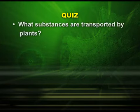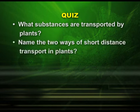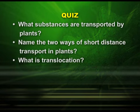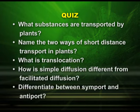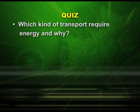Dear students, let us have a simple quiz. Try to answer the following questions: What substances are transported by plants? Name the two ways of short distance transport in plants. What is translocation? How is simple diffusion different from facilitated diffusion? Differentiate between symport and antiport. And which kind of transport requires energy, and why? Thank you.